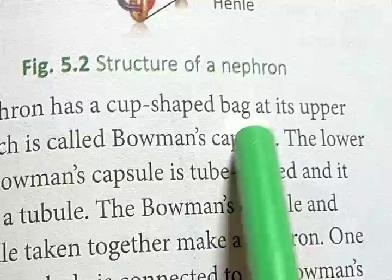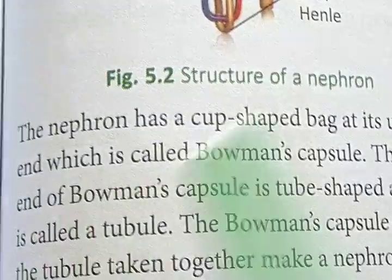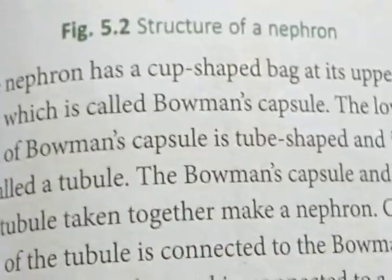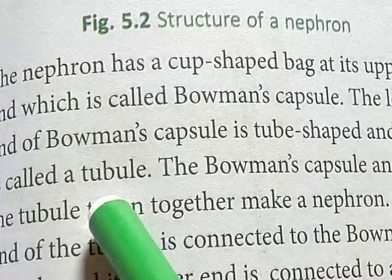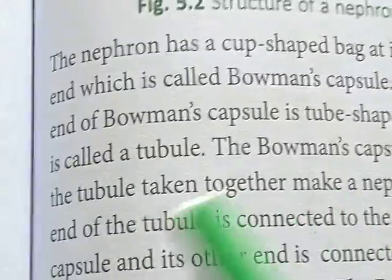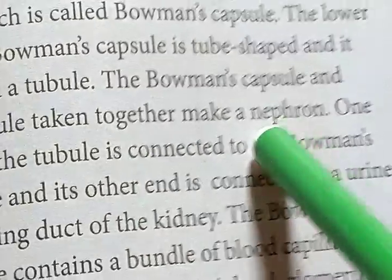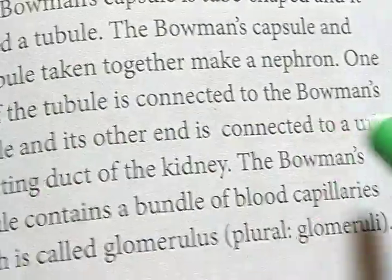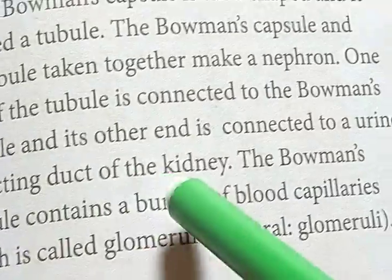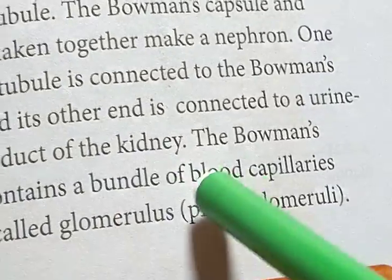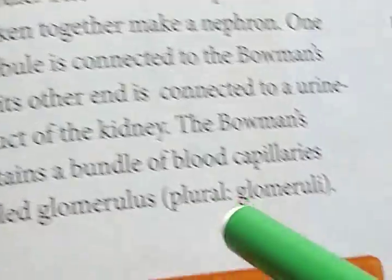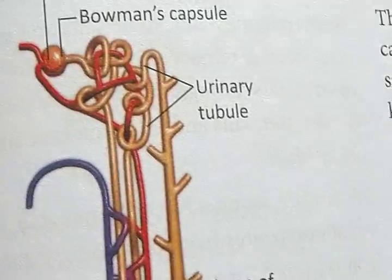The nephron has a cup-shaped bag at its upper end called the Bowman's capsule. The lower end of the Bowman's capsule is tube-shaped and is called the tubule. The Bowman's capsule and the tubule together make up a nephron. One end of the tubule is connected to the Bowman's capsule and the other end is connected to the urine-collecting duct of the kidney. The Bowman's capsule contains a bundle of capillaries called the glomerulus — plural: glomeruli.